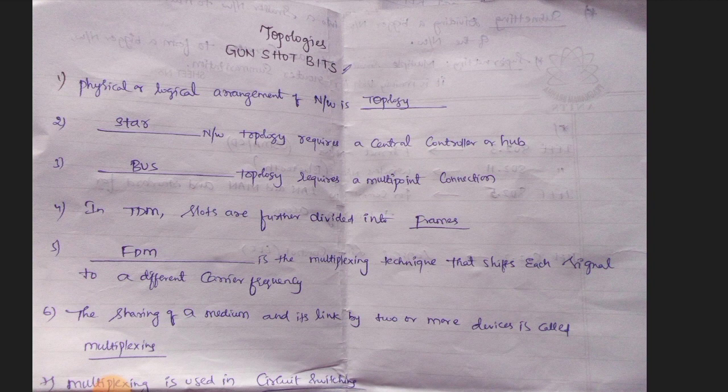Coming to what is called topology: it is the physical and logical arrangement of a network. The network topology that requires a central control is the star topology. This is very important. Then there is the multipoint connection.